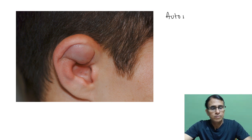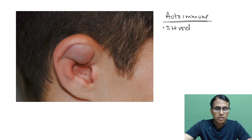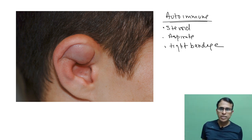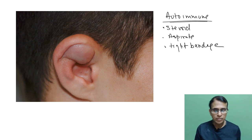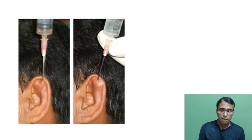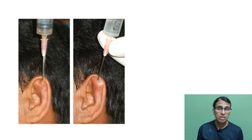Treatment involves steroids — because it is an autoimmune disease — aspiration of the fluid, and application of a tight bandage. These three steps: give steroid, aspirate the fluid, and apply tight bandage on the pinna. But applying a tight bandage on the pinna is challenging because the pinna has many ups and downs and is not a smooth structure — it's difficult to apply sufficient pressure at the scaphoid fossa.